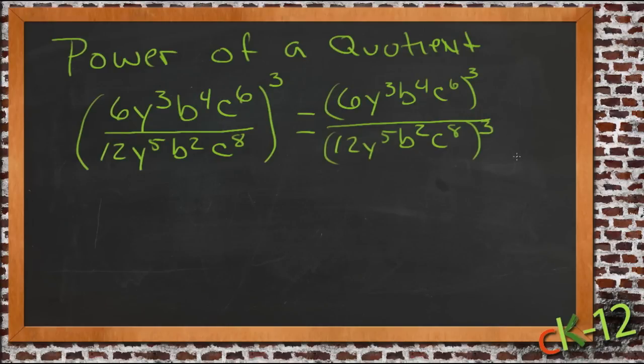So we could do it this way, in which case then we could go through and raise each of these to the power of 3 first and then cancel everything that was cancelable. Or we can start by doing our canceling first and then take the result and raise the result to the power of 3.